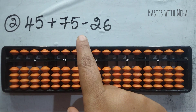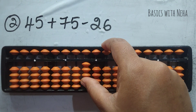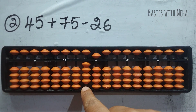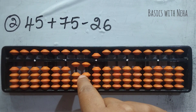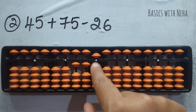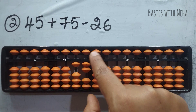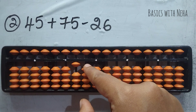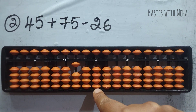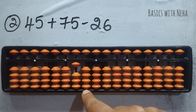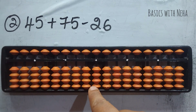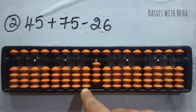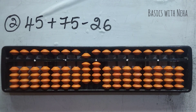Second question: 45 plus 75 minus 26. First place 45. Now add 7 — to add 7, the beads are not available, so use the big friends formula: plus 10 minus 3. And add 5 — if beads are not available, use the big friends formula: plus 10 minus 5. Now minus 26 — minus 2 directly. To minus 6, the beads are not available; use the big friends formula: minus 10 plus 4. Again minus 10 is not available here, so do minus 10 on the tens rod, then come back to ones place and add 4. Remember, we jumped this rod — add everything in the jumped rod. My answer is 94.